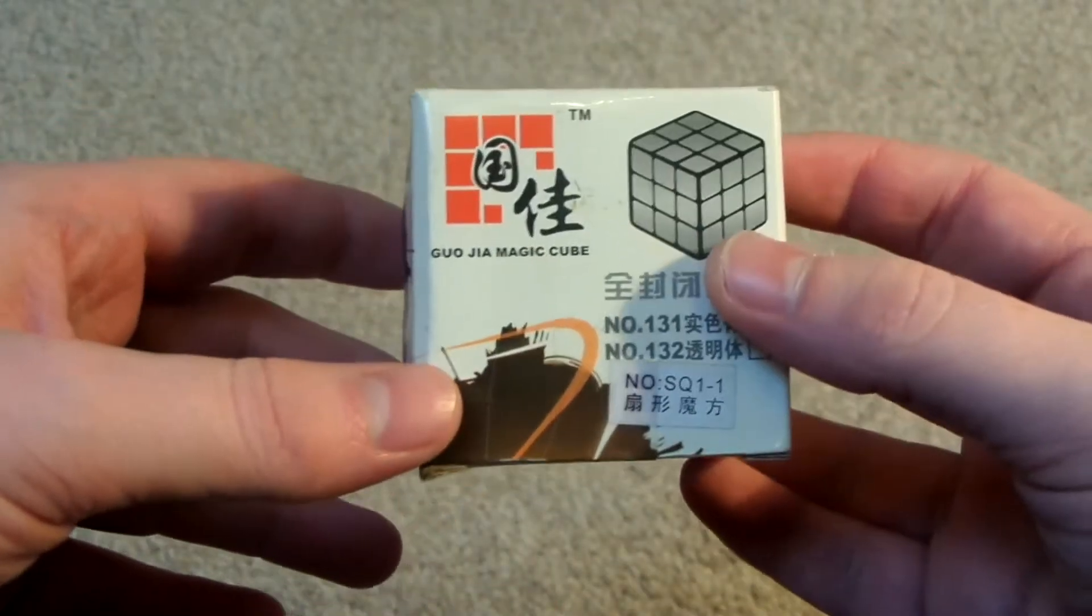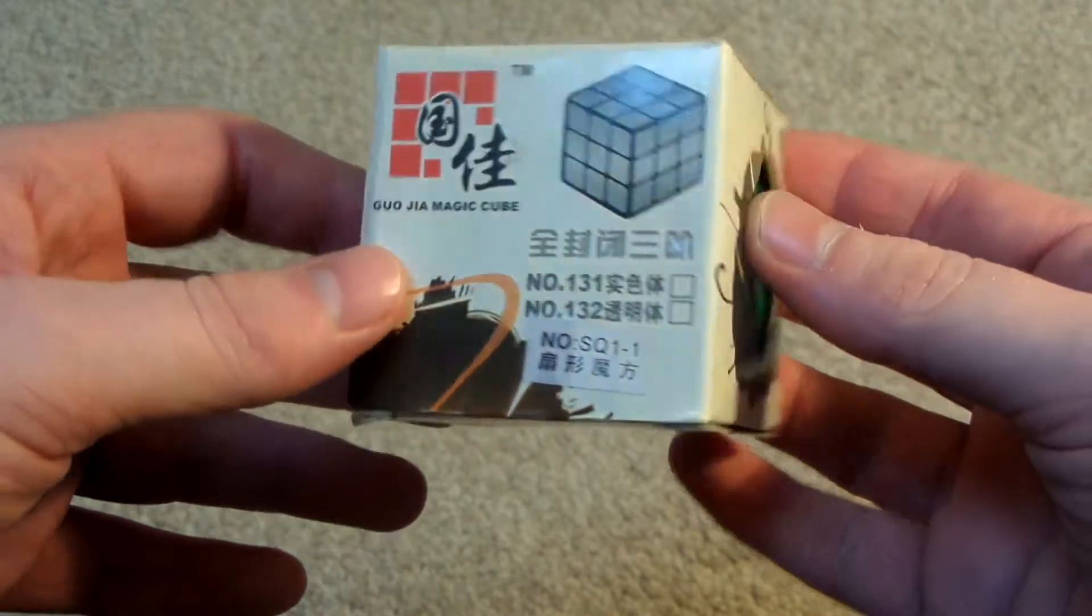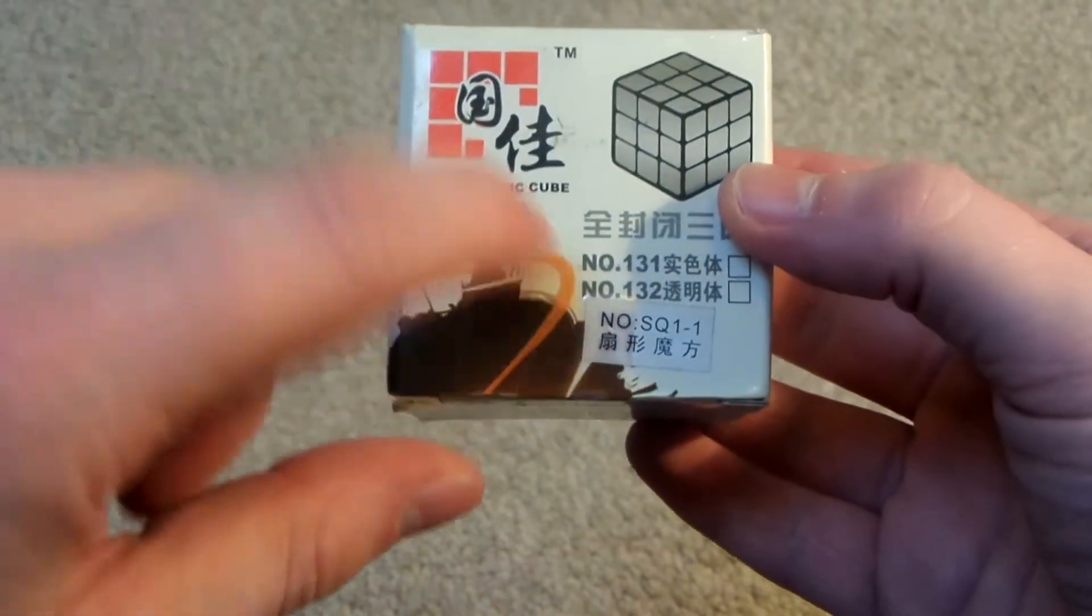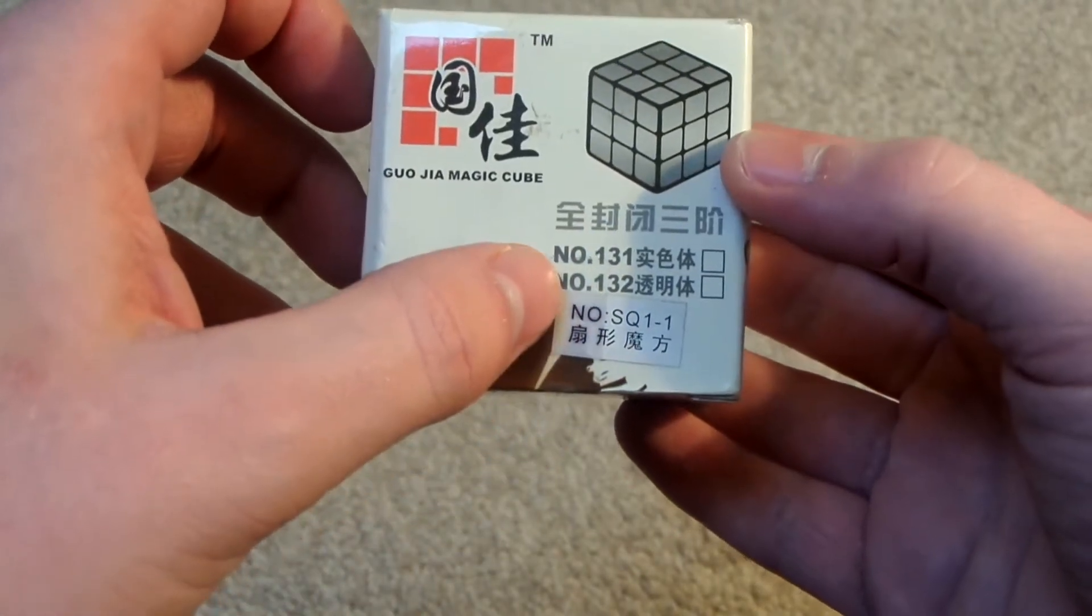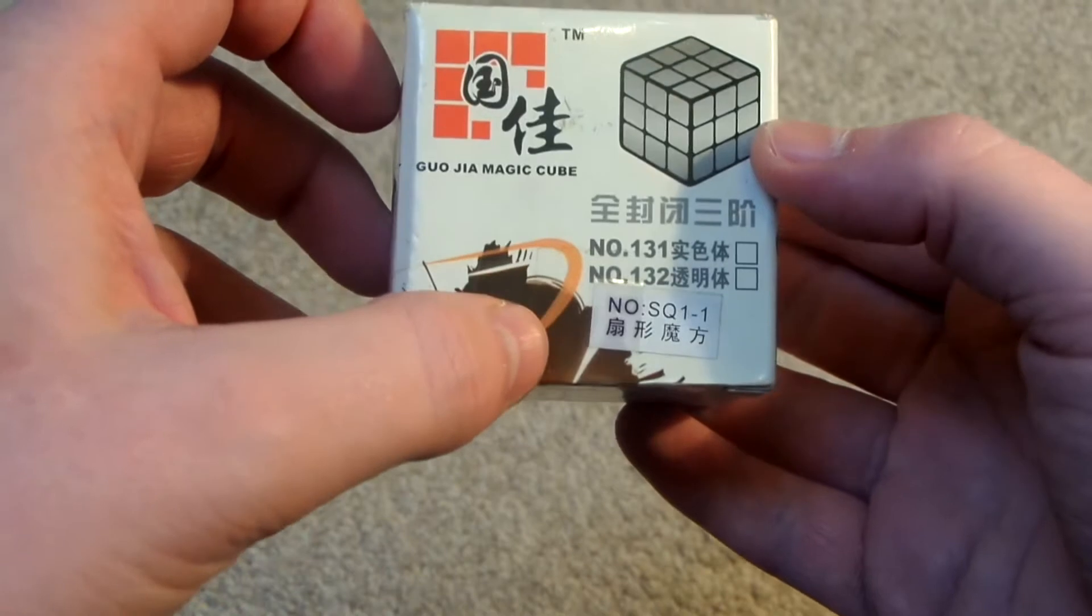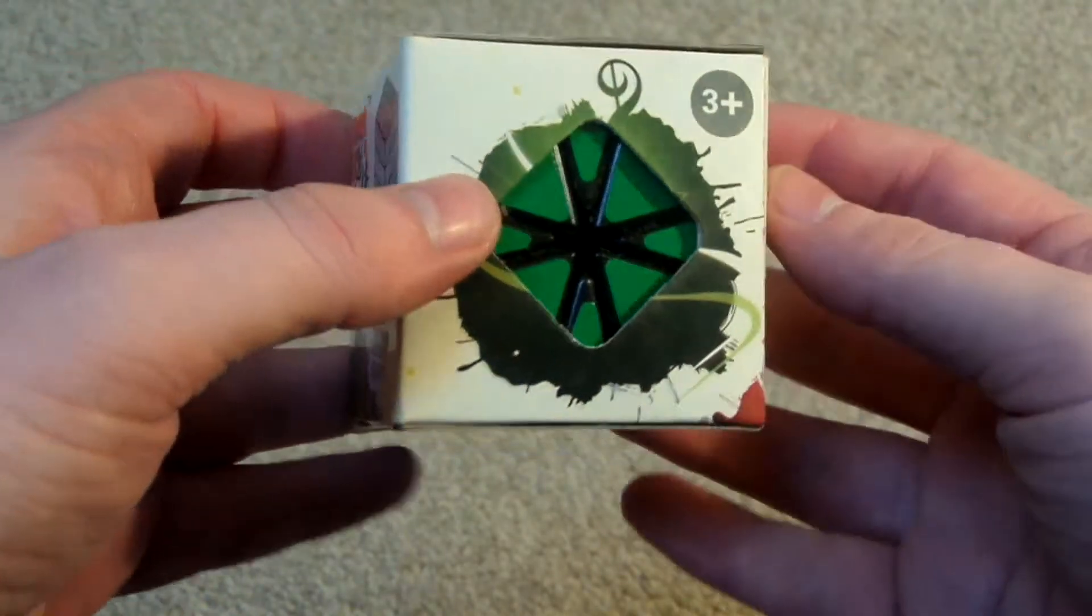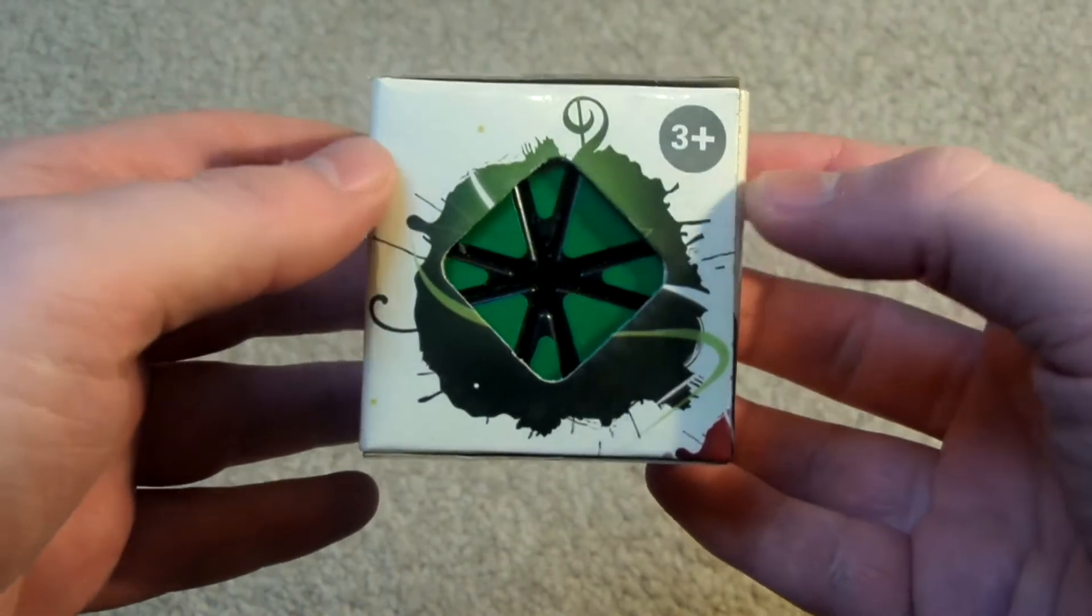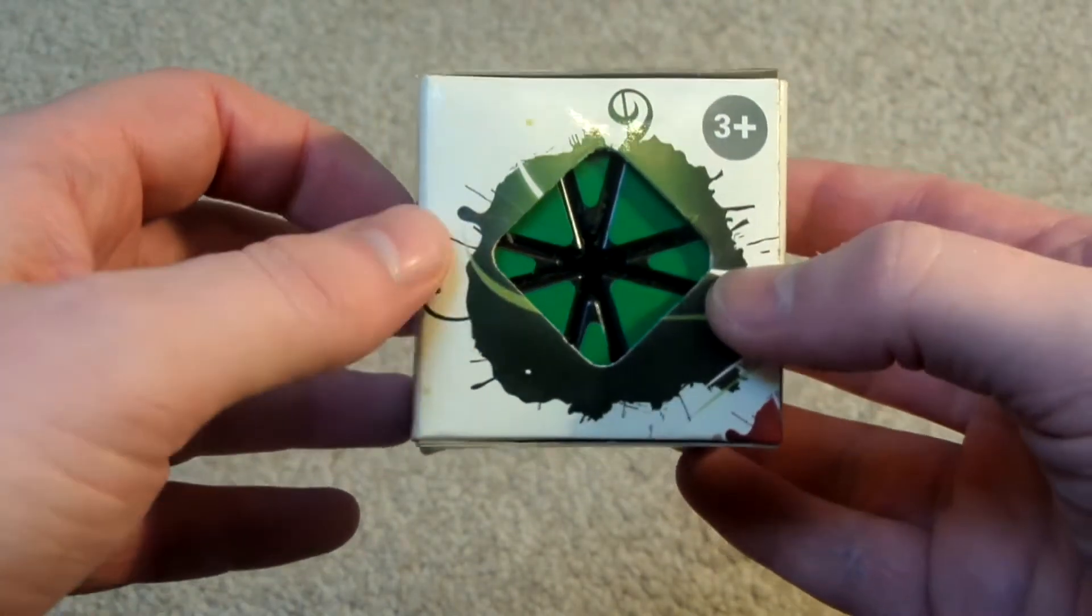So this is a Gujia square one. Number 131 and number 132. I guess they're both different models. I don't know, I'm not sure. Three plus. I do quite like the design of the box. Kind of looks like splash paint or something.